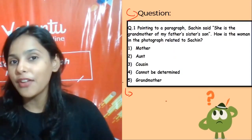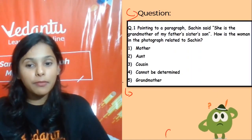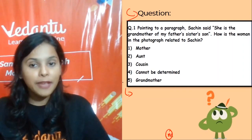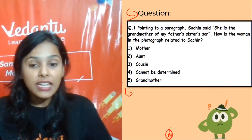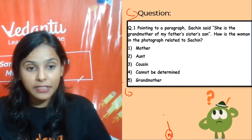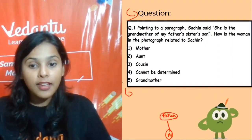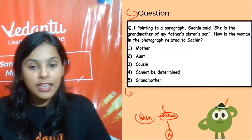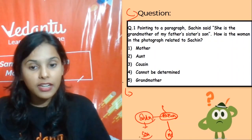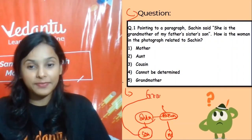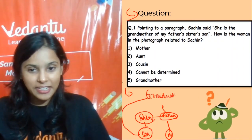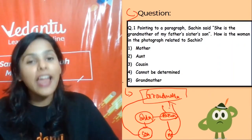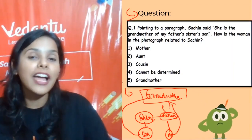Let me start with myself — 'me'. Now, my father's sister is here, and her son is here. The grandmother of that sister's son would be the maternal grandmother — nani. So for Sachin, she is also his grandmother. I hope you have solved it!